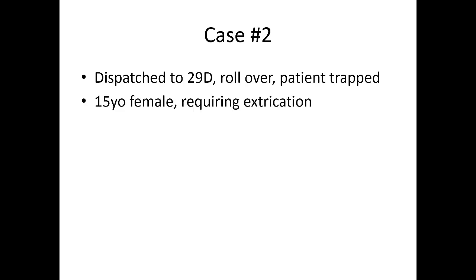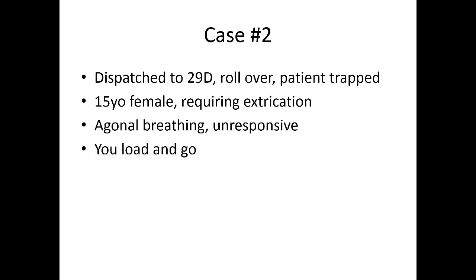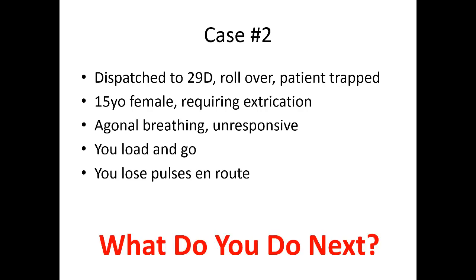Case number two: you're dispatched to a 29 Delta, a rollover with a patient who's trapped inside. It's a 15-year-old female who requires a pretty prolonged extrication. She's agonally breathing and unresponsive. You decide to load and go, but you lose pulses on the way to the hospital. What are your next steps?